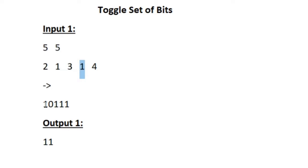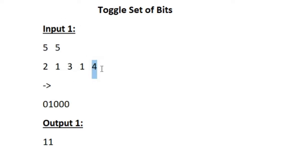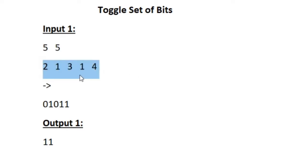Then the fourth integer is 1, so again from the first index we have to toggle all the bits. The last two zeros must be toggled to 1. This is how our updated string looks. This is actually a binary representation, and now we have to find the decimal equivalent of this binary expression — that is our task.